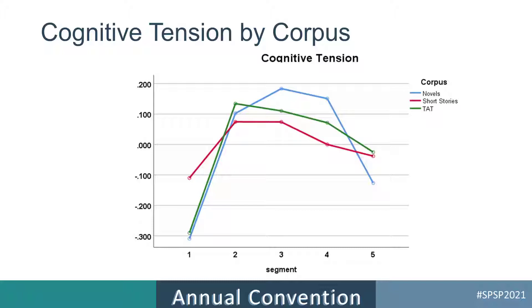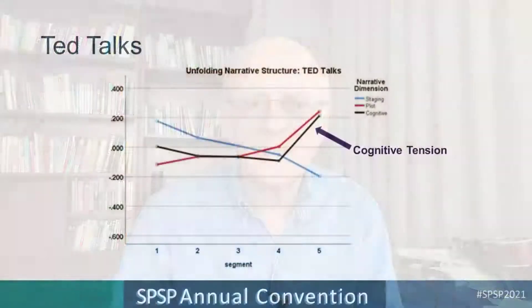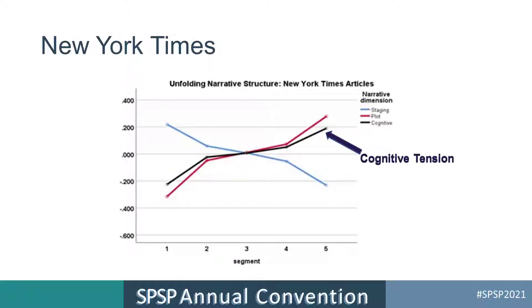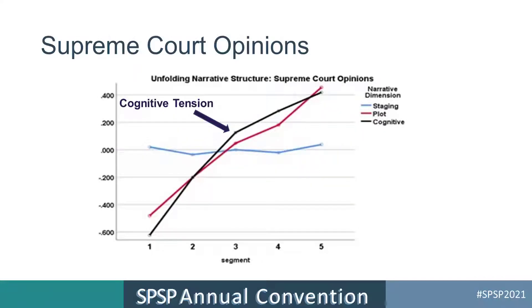Once you get to the end, you don't need to work it through anymore — life is beautiful. The cognitive tension dimension is the most interesting and is an important fingerprint of the genre itself. What we discovered was that for non-fiction stories, the cognitive process dimension works completely opposite. For TED Talks, for example, you see low cognitive process at the beginning, low in the middle, but cognitive process goes up at the end. The same pattern holds for New York Times articles, Supreme Court decisions, and all of the non-fiction narratives we study.